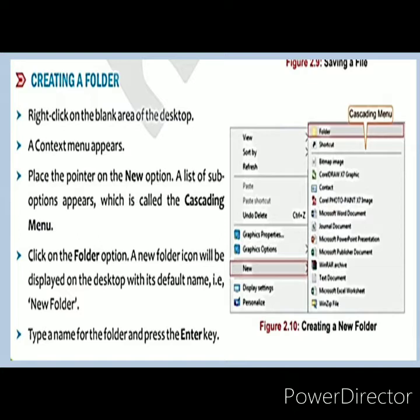Next is creating a folder. For creating a folder, you have to right-click on the blank area of the desktop — a context menu will appear. The menu that appears after right-clicking is called the context menu. In the context menu, there is an option called New. Click on New and some menu will open — that is the cascading menu. In this menu, the first option is folder. When you click on folder and press the Enter key, a new folder will be created.